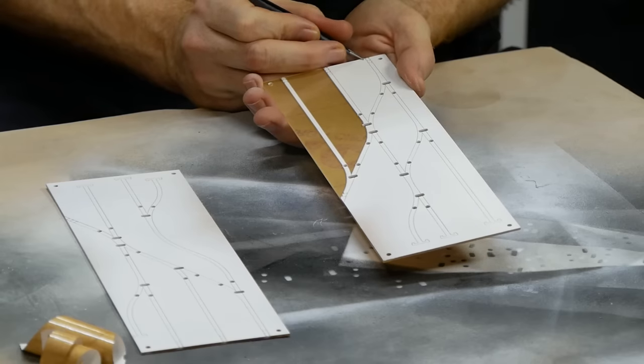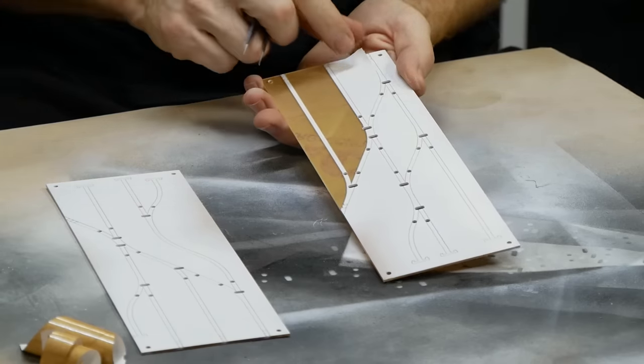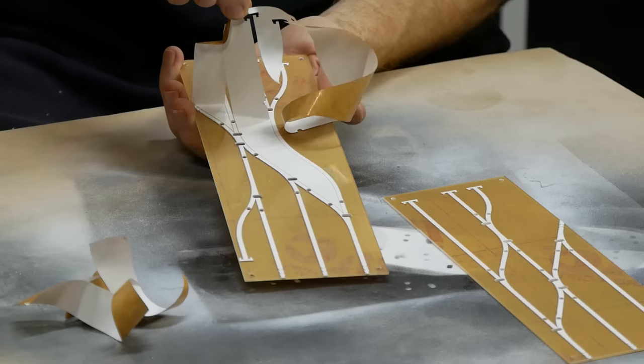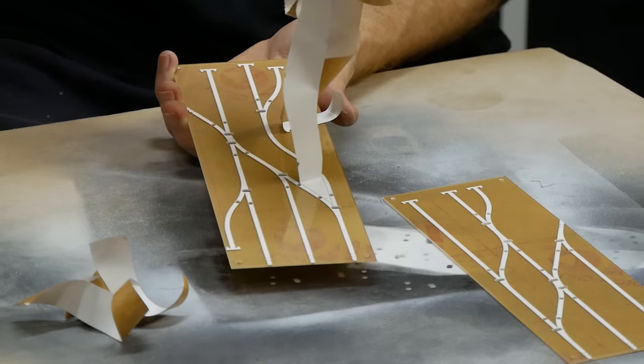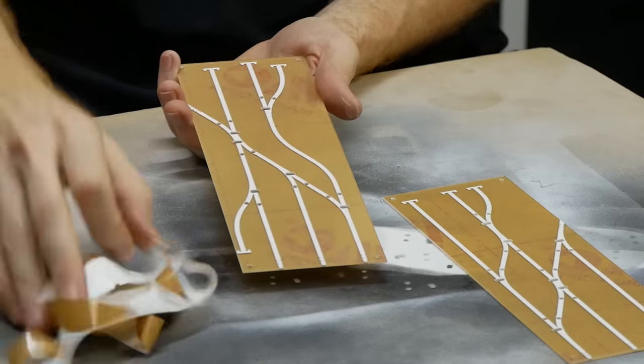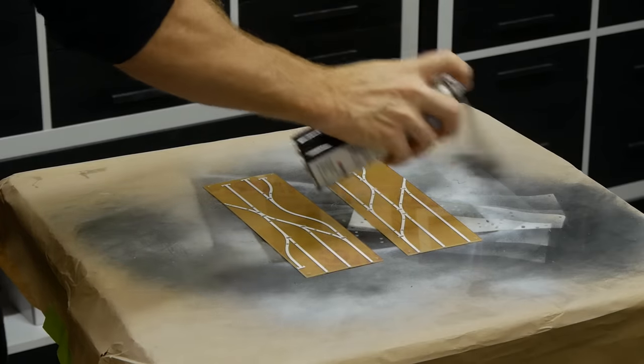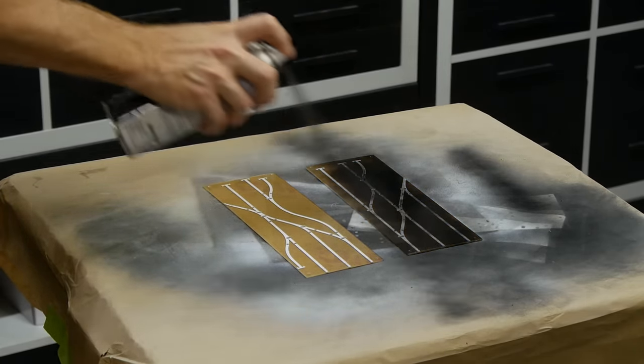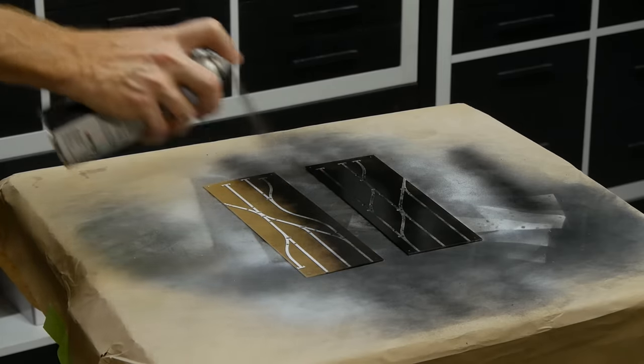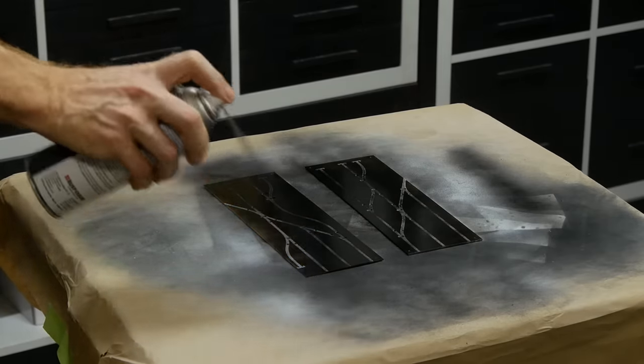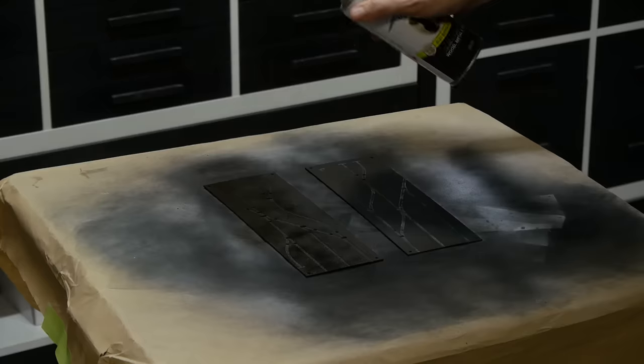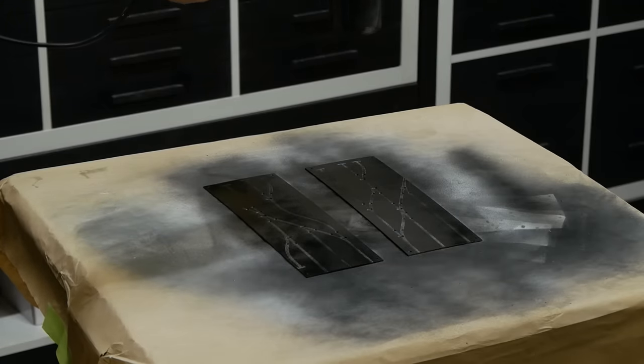Now for the black. Peeling off the remaining protective paper is so satisfying. Remember that this is the back of the panel. The front is the side still covered by the protective paper. Now the black goes right over the top of the white, covering all the remaining clear acrylic. I'm using Rustoleum black primer for this layer, doing a few light coats and letting it dry between each layer of paint.